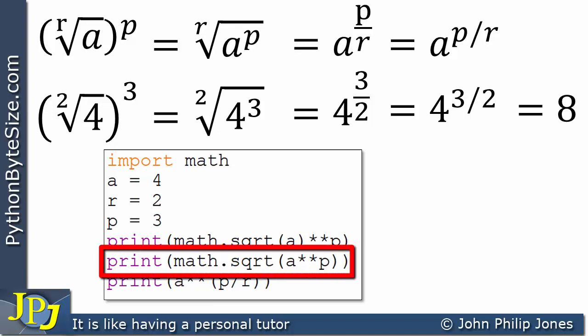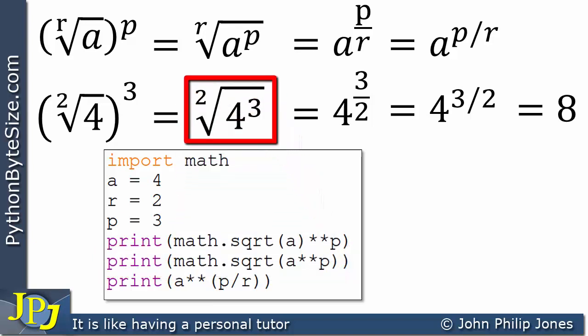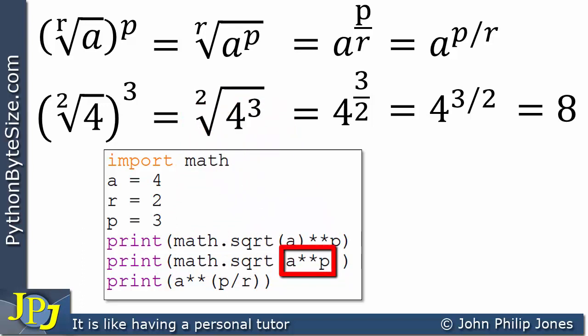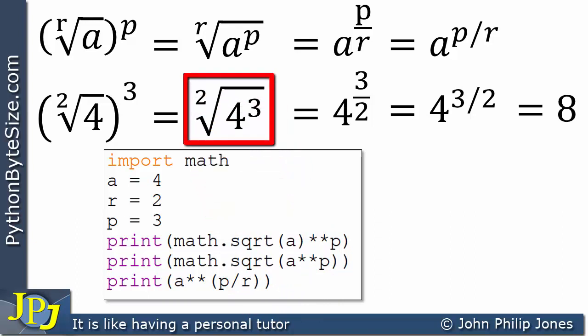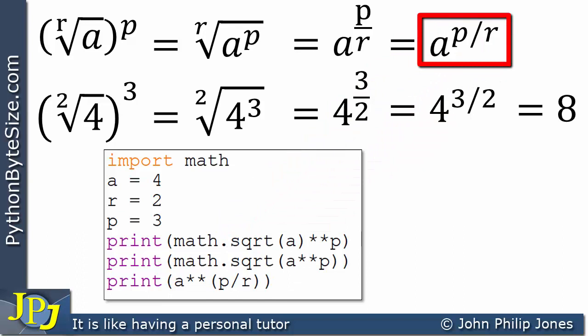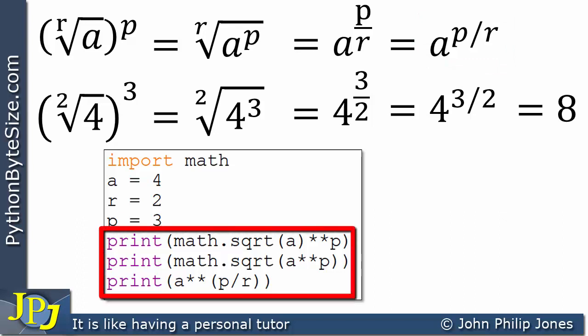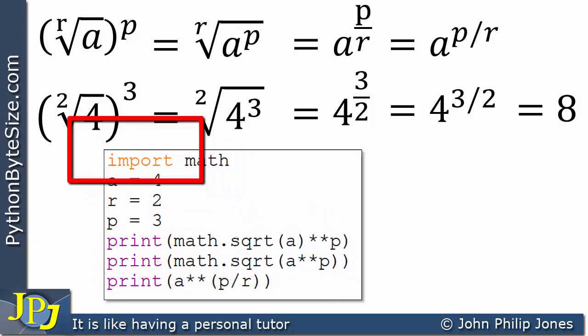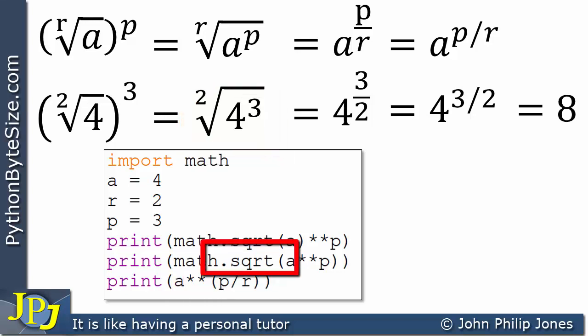The second print statement raises a to the power of p first and then takes the square root — reflecting the second approach. The third print statement uses a raised to the power of p divided by r, directly computing the fractional exponent. All three calculations correspond to the three equivalent expressions discussed, and running the program, each print statement should output the value 8.